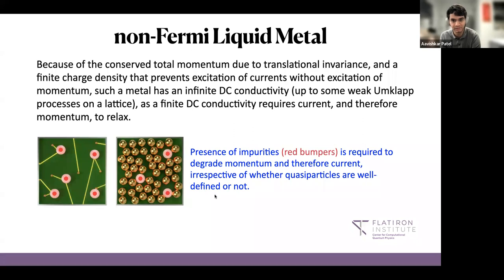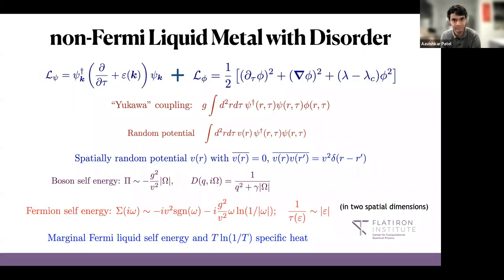So in order to get this pretty large T-linear resistivity down to very low temperatures you need to be able to relax momentum, and the only reasonable way you can do that is to consider the effects of disorder and impurities in your system. That can cause momentum non-conserving collisions and relax momentum. So one can naively try to add disorder to this theory of the non-Fermi liquid metal. The simplest thing to do is just add a random potential term for the fermions, and if you do this that changes the low energy structure of the fermion's Green function.